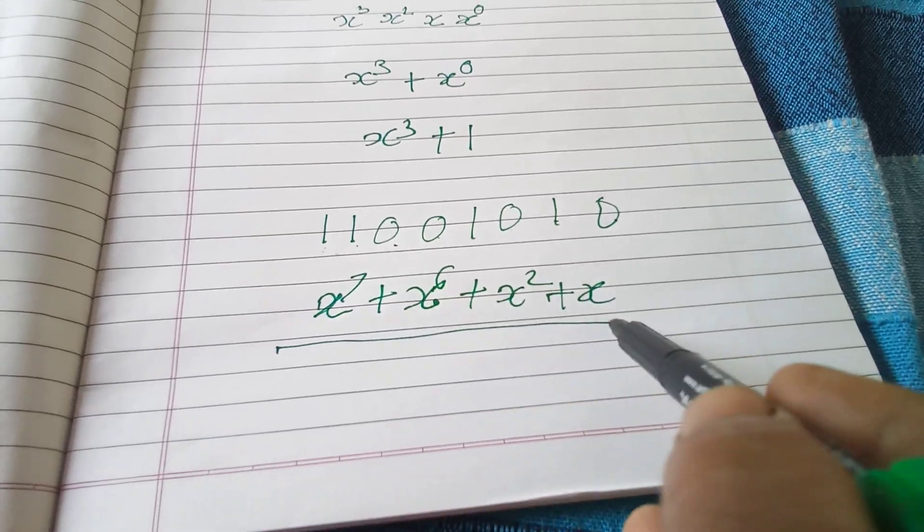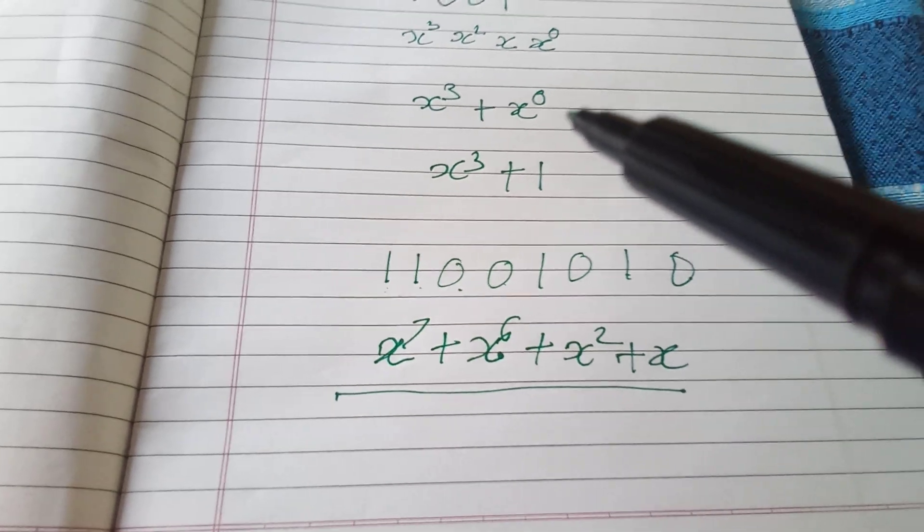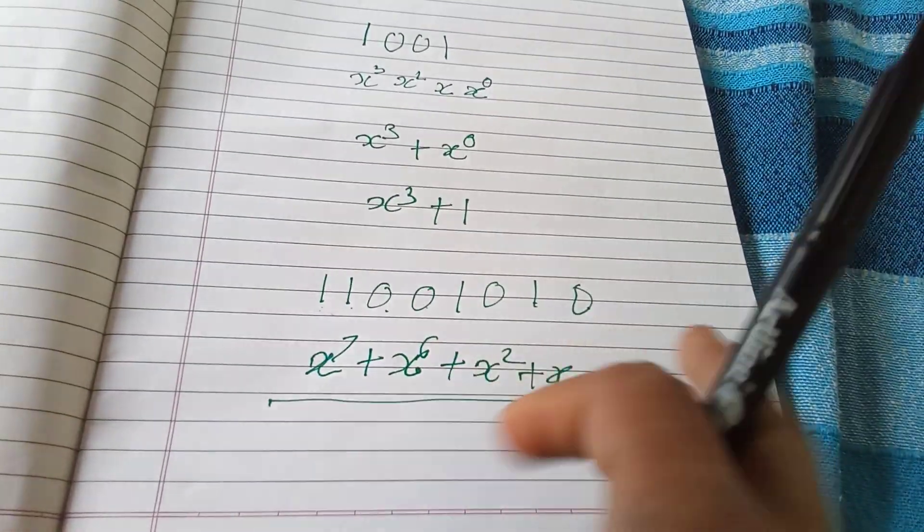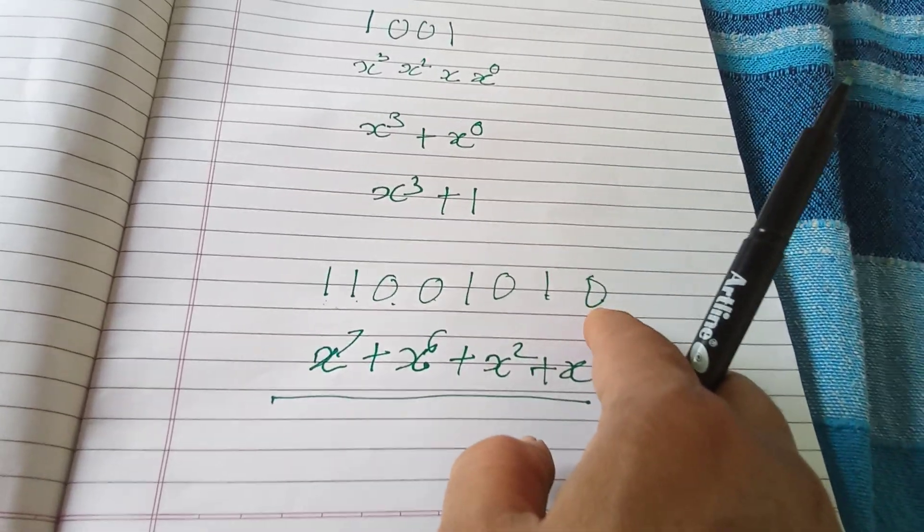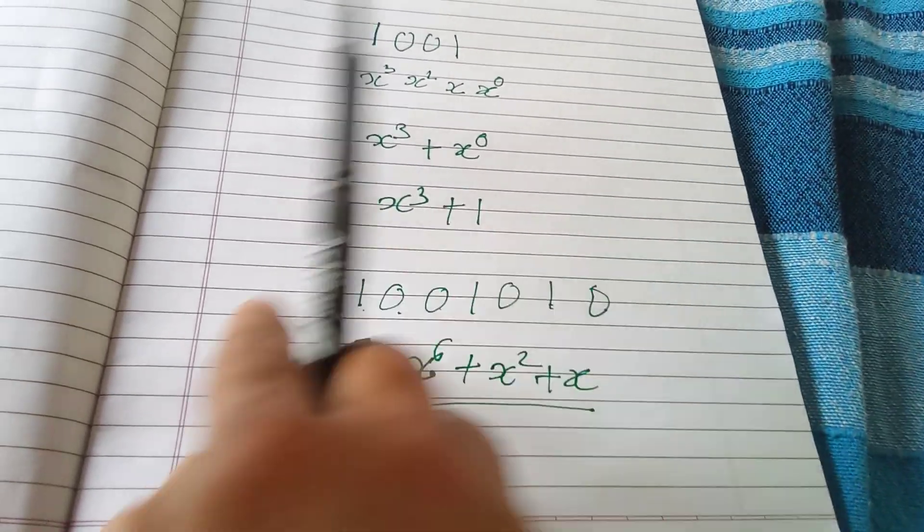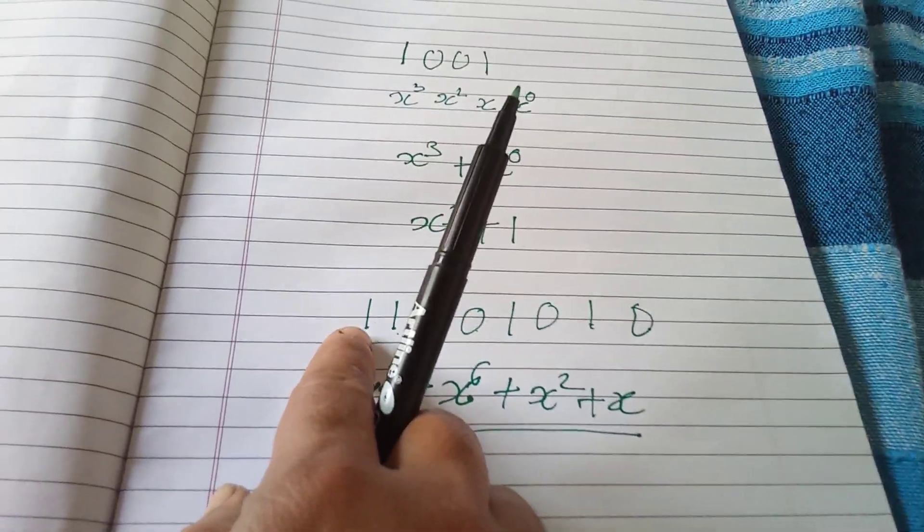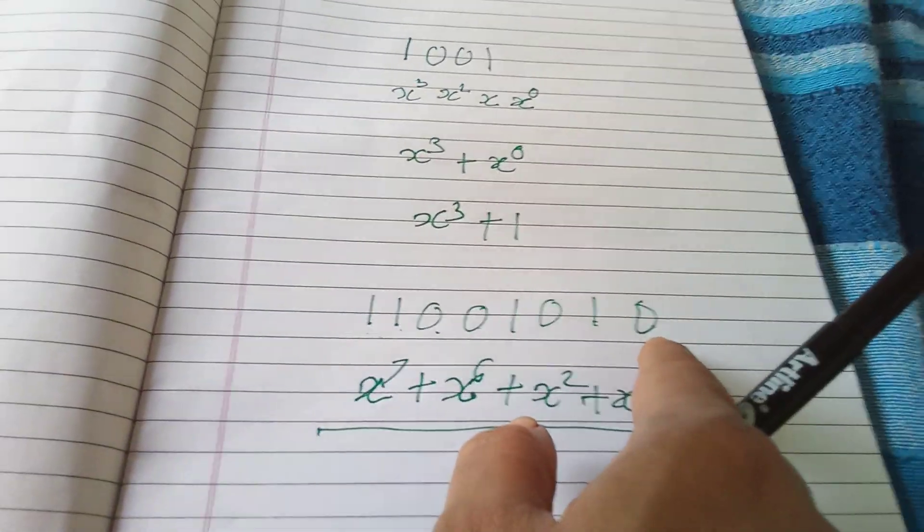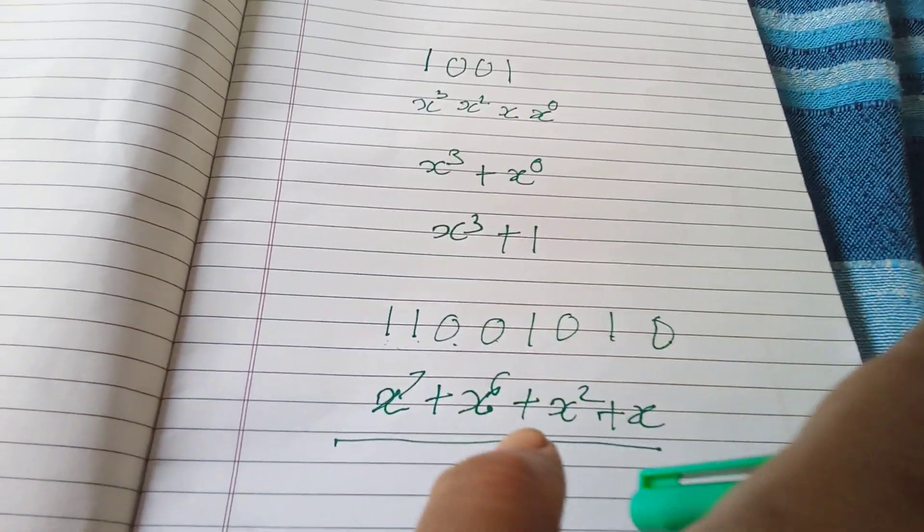So it's very easy, but many times we get confused whether we have to start with this power, last one as x⁷ or first one. But in cyclic codes you have to start with this and count number of bits. If it is 8, then highest power is x⁷.